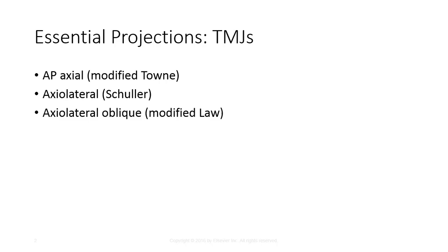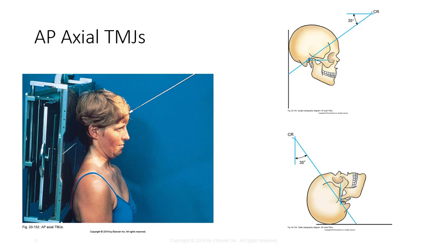For the AP axial modified Towns TMJs, the patient can be supine or seated upright with the posterior skull in contact with the upright bucky or the tabletop. Align the MSP of the head and the OML perpendicular to the IR plane. The CR should be angled 35 degrees caudal and centered midway between the TMJs, entering a point 3 inches above the nasion. The collimated field should be 8 by 10 inches crosswise.